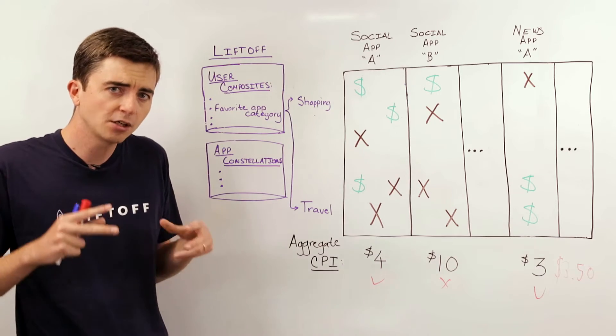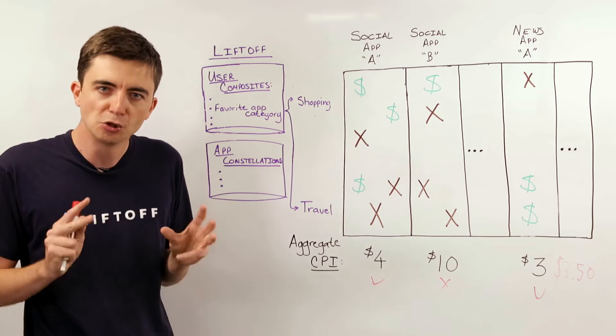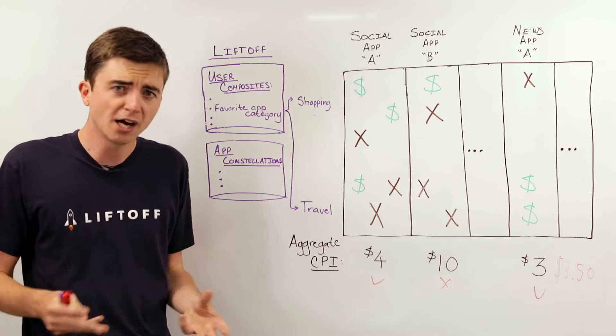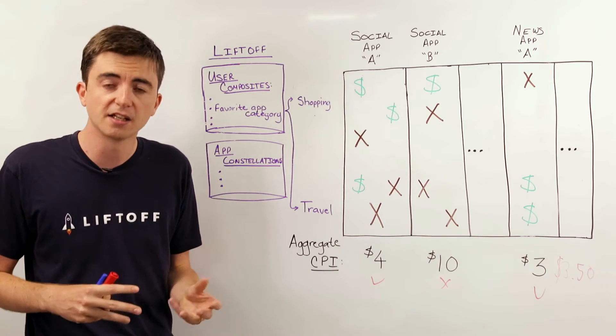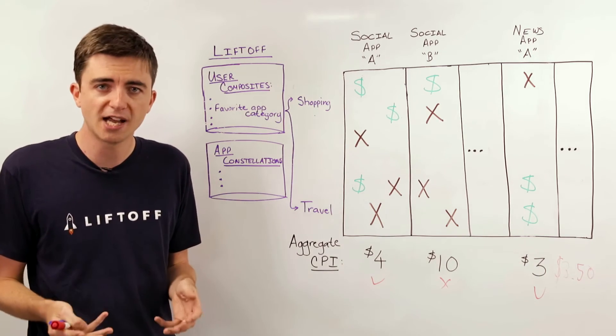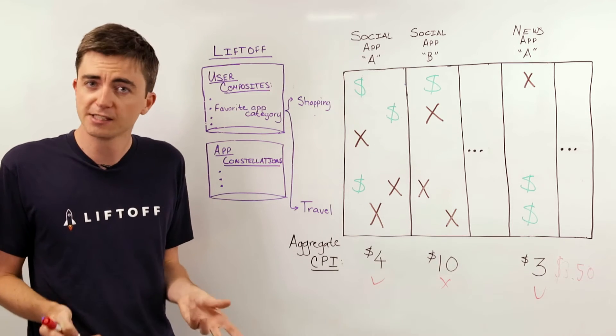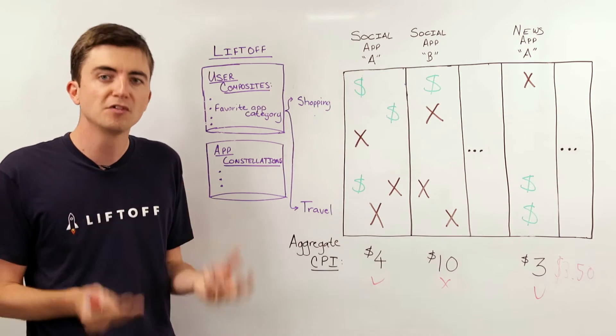Now, because we've already got over 500 million users' worth of user composites and app constellations, it's very hard to, one, collect this data, and two, leverage it in real time. But we've invested heavily in it as a company because it's proven to be so valuable.